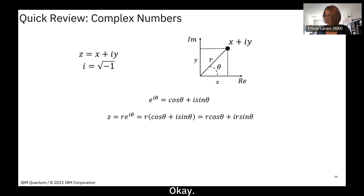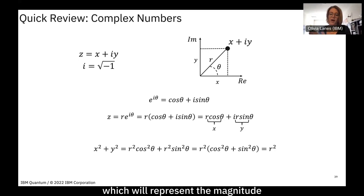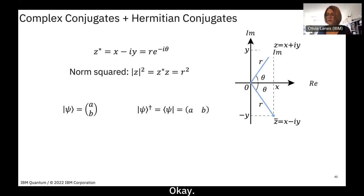If we square all of these components, the magnitude equals r squared, which represents the magnitude of that number in polar coordinates.